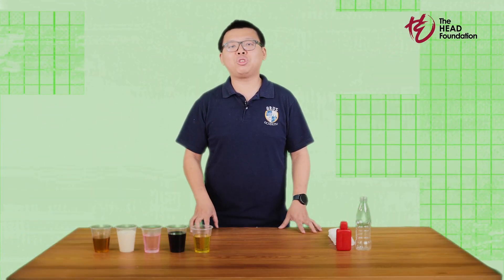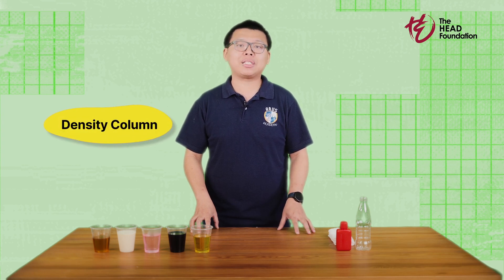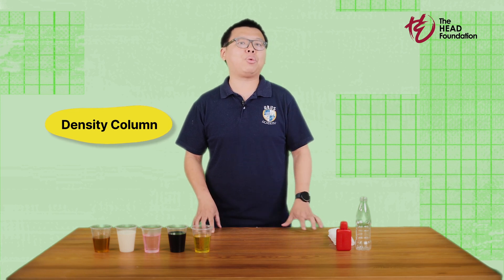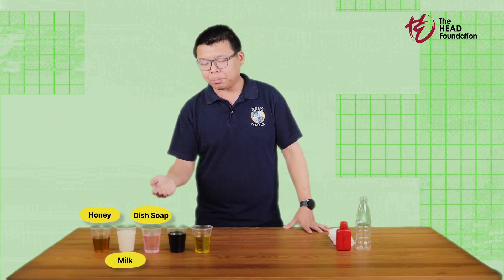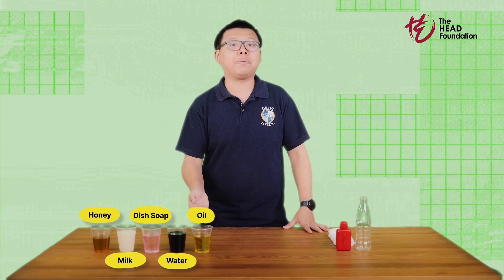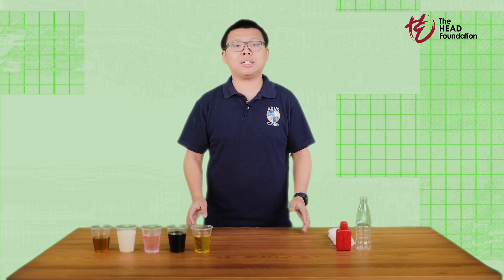Now, moving on to the experiment itself. We are going to create what is called a density column to show the effects of differences in density. For this experiment, I am using five liquids of different densities: honey, milk, dish soap, water, and oil. Here, I am adding food colouring into the water to make it easier to distinguish from other liquids. You also need a clear container — I am using a recycled plastic bottle, but feel free to use any other clear container.